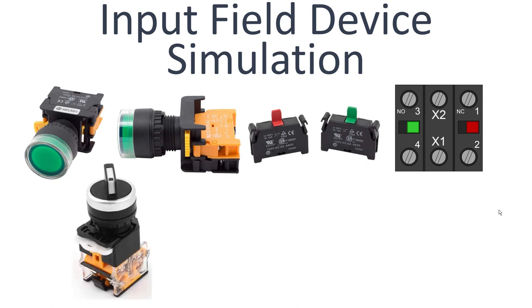For input field devices, I use large push buttons with LEDs in them — if you're going to use something like this you'll need a larger box, but these are very inexpensive. A selector switch is the same thing as a toggle switch. There are different kinds: center off, spring return to center, single pole single throw, single pole double throw, and so on. This is a two-position selector switch, same as the toggle switches. I typically use toggle switches.